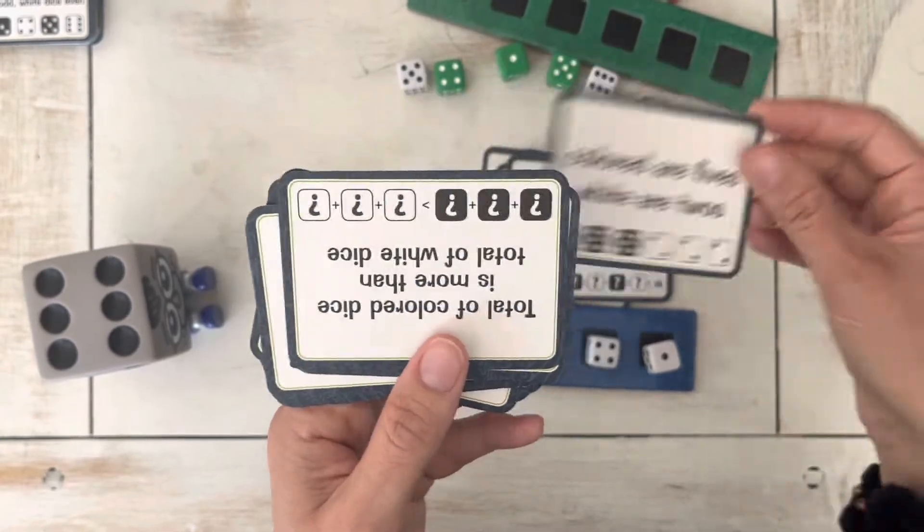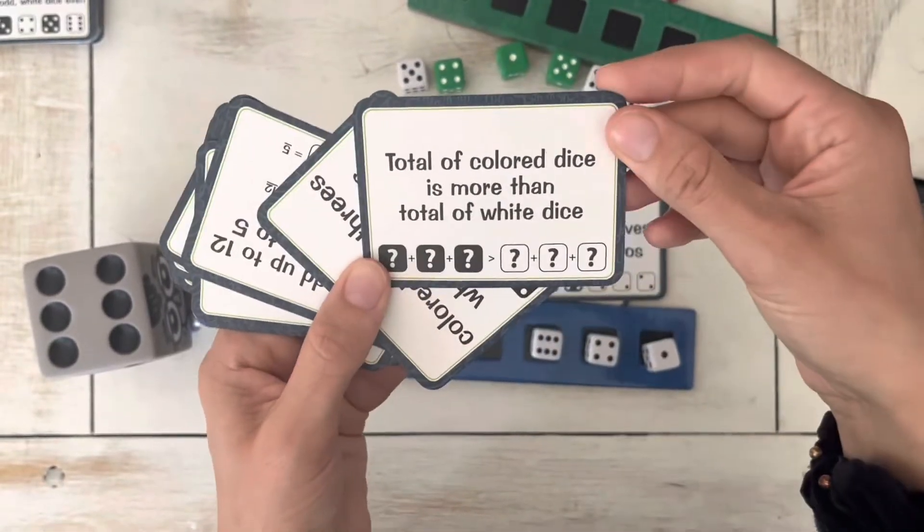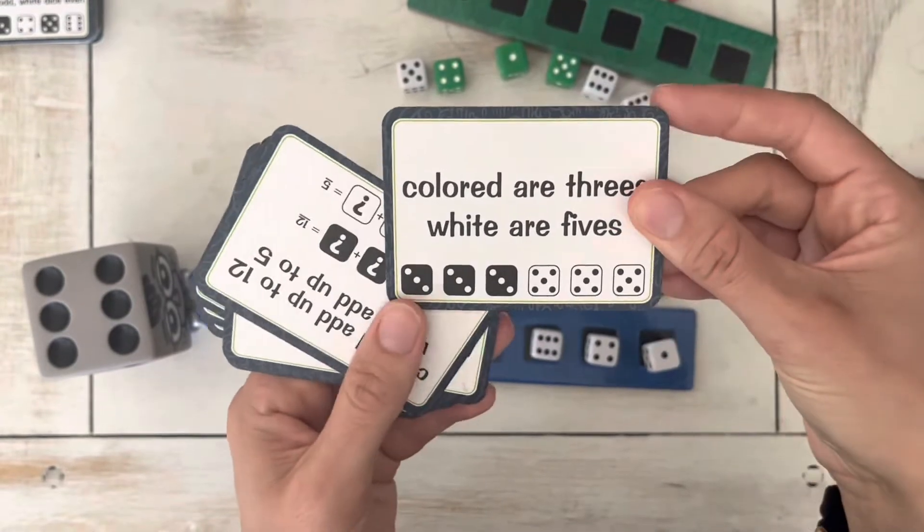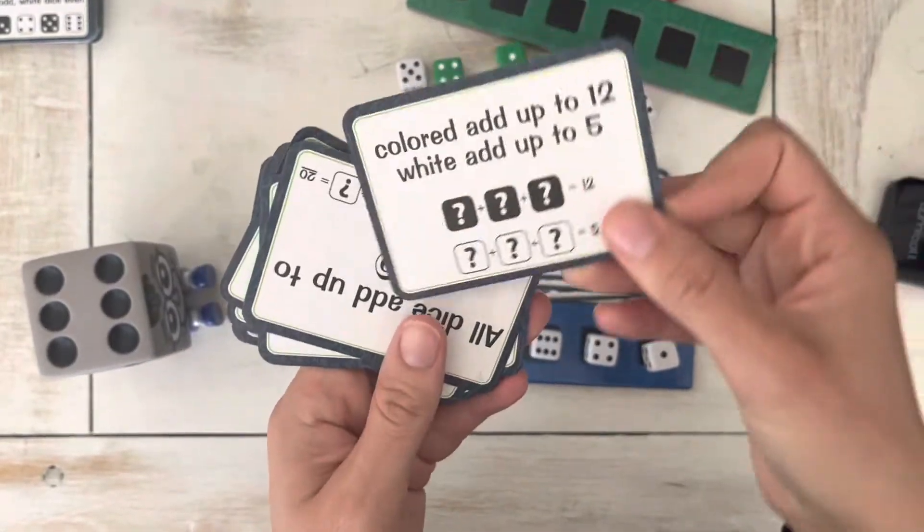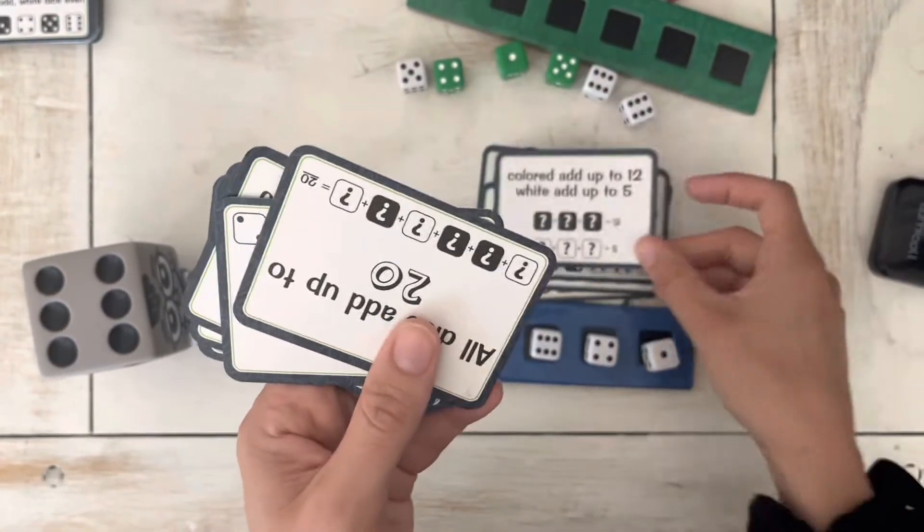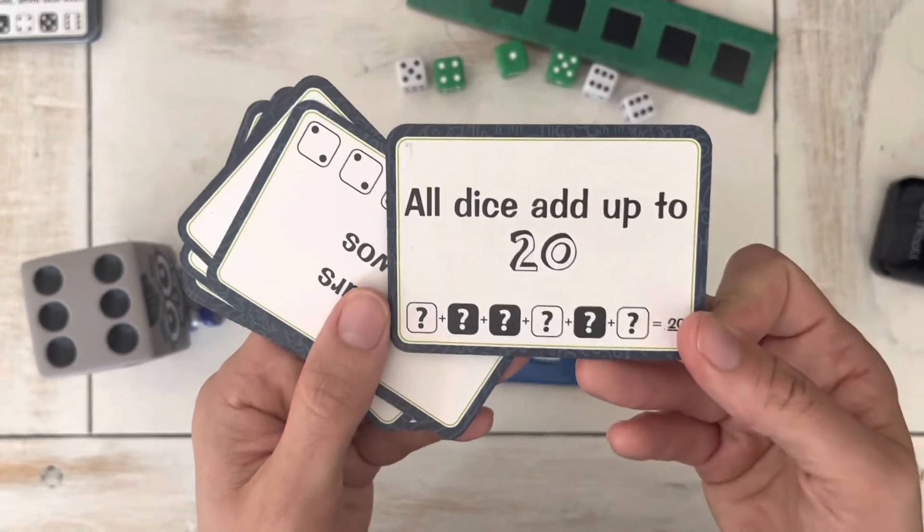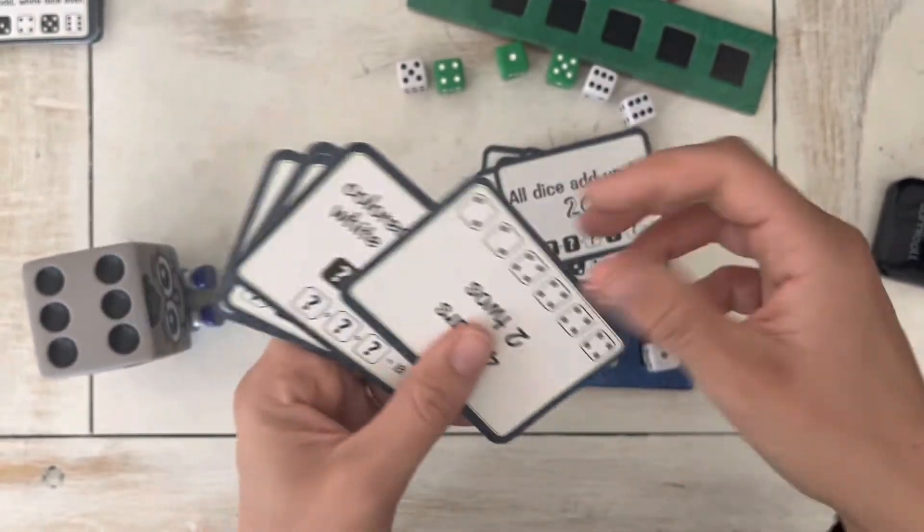Colored are fives, whites twos. Total of colored more than the total of white. Colored threes, whites fives. So they're just looking for pattern recognition, but there's also some addition going on. I like the variation.